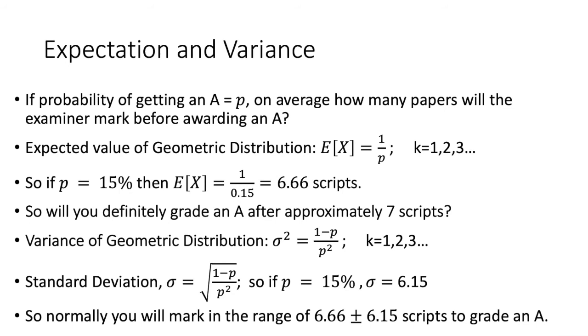So, if P equals 15%, then the standard deviation is 6.15. Hence, normally, you will mark anywhere in the range of 6.66 plus or minus 6.15 scripts to grade an A. You obviously can round those numbers off, because there's no fractional script.